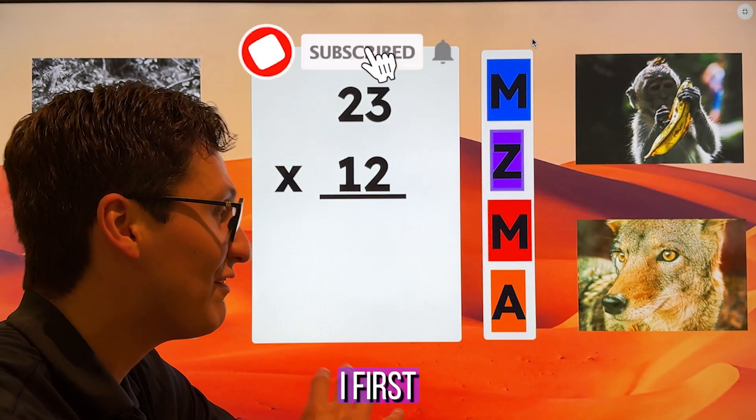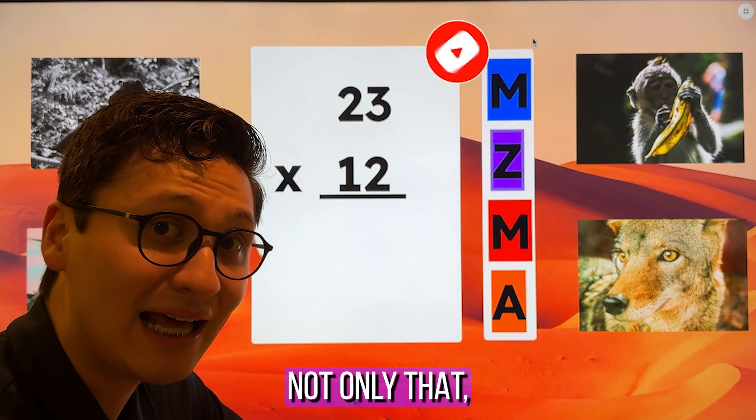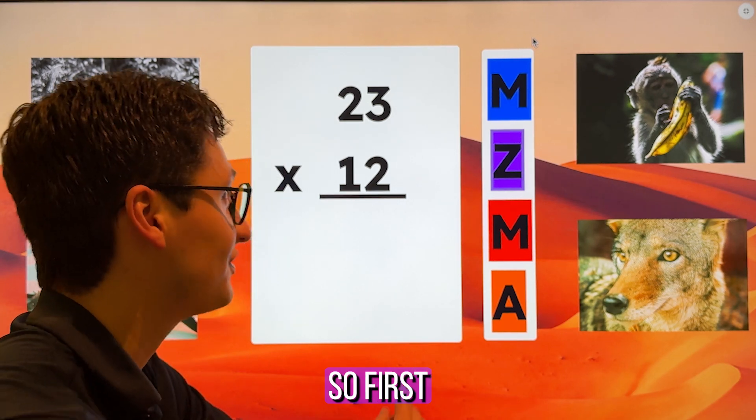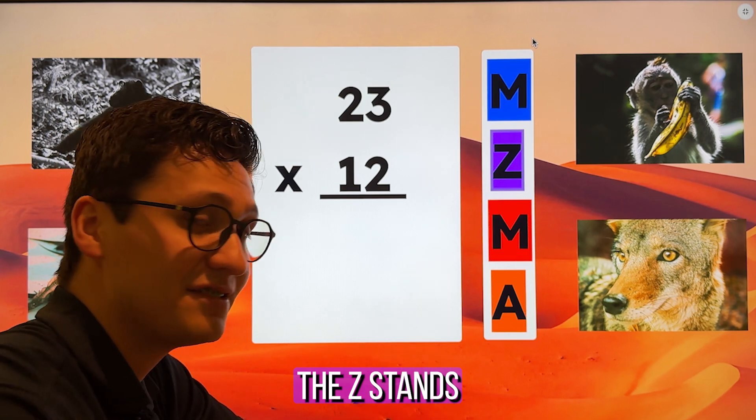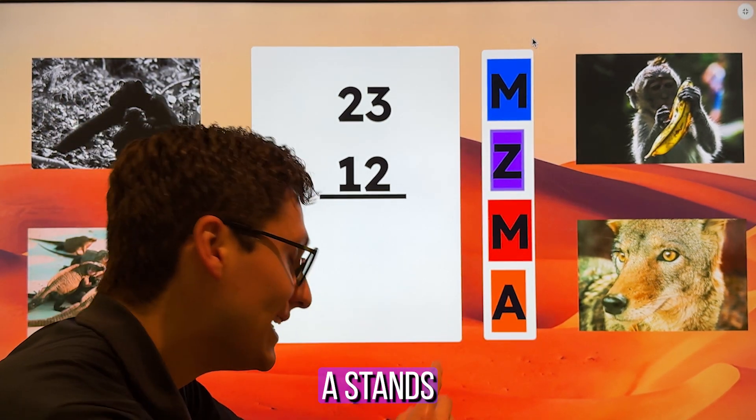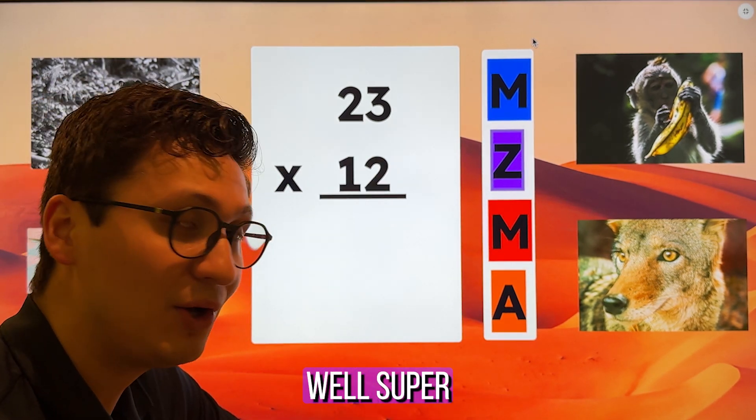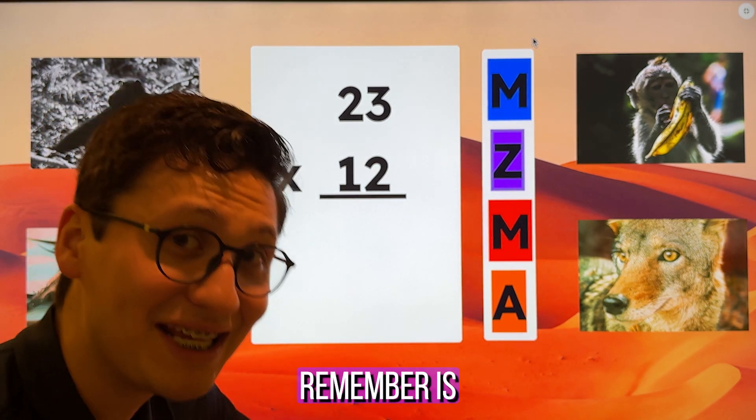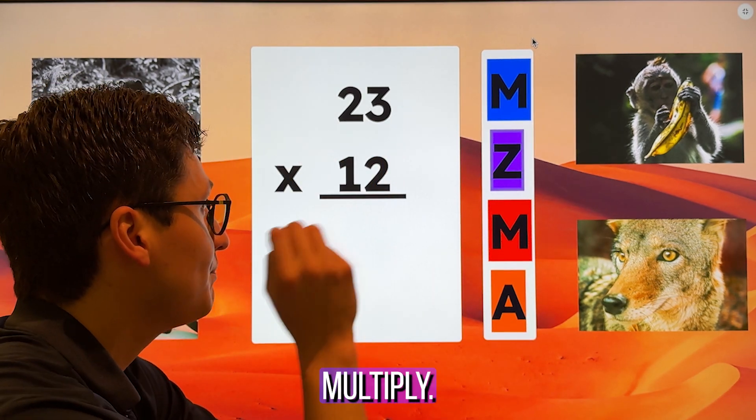Before we start to multiply, I first need to teach you exactly what each of these letters means. The M stands for multiply, the Z stands for zero, the M stands for multiply, and the A stands for add. Now, how are we going to remember these letters? Super simple, super easy. All you have to remember is many zoos, many animals: multiply zero, multiply add.